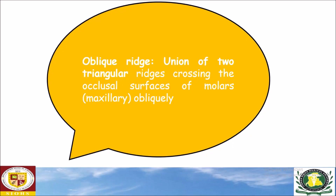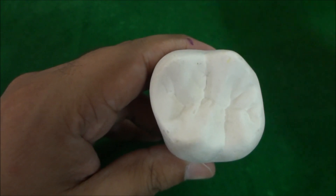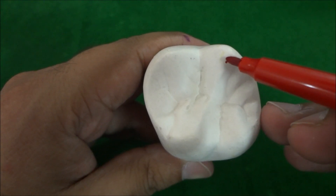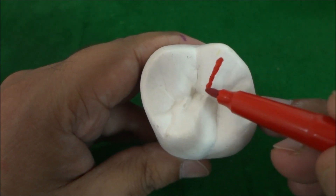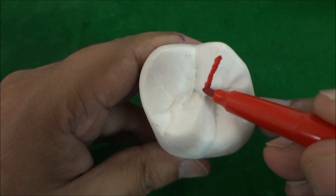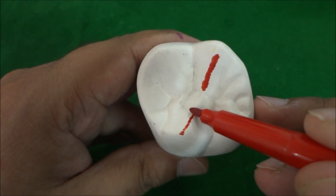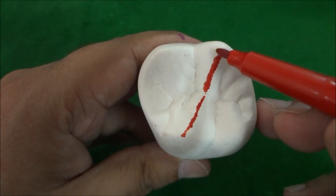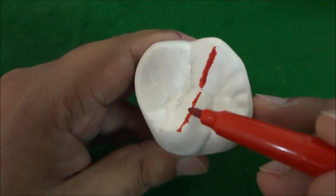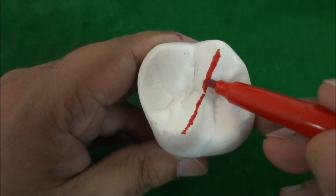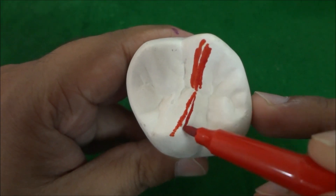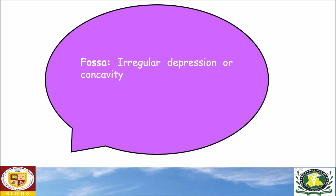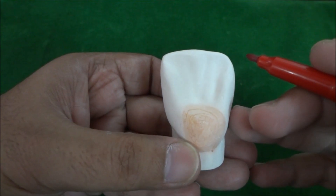An oblique ridge is a union of two triangular ridges crossing the occlusal surface of molars obliquely. On this permanent maxillary first molar, you can see the distobuccal cusp triangular ridge and the mesiolingual cusp triangular ridge. The union of these two triangular ridges — the distobuccal triangular ridge and the mesiolingual triangular ridge — forms an oblique ridge.